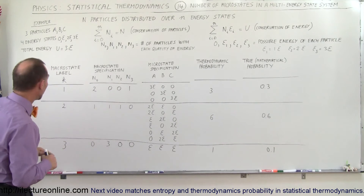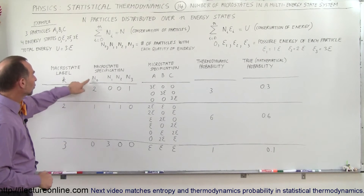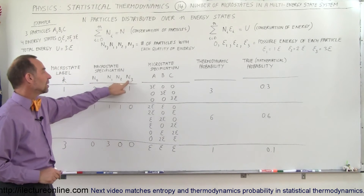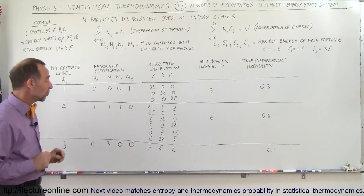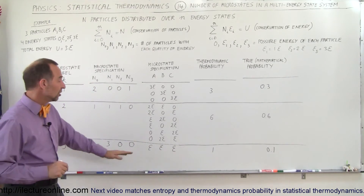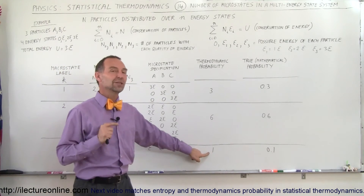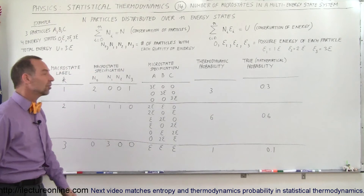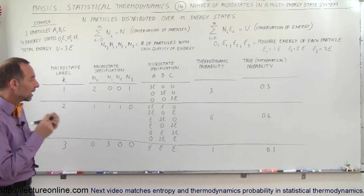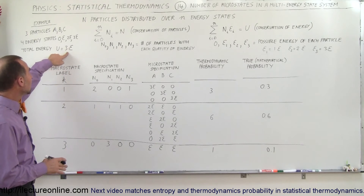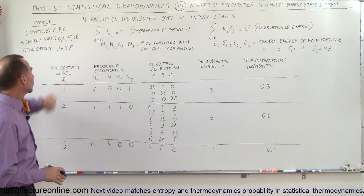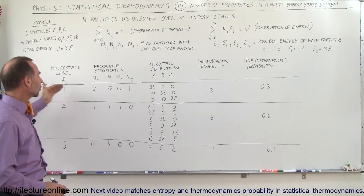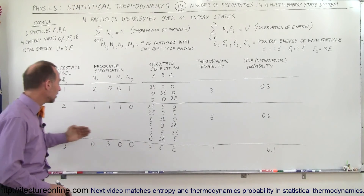The final microstate type is where all three particles each have E amount of energy — none have zero and none have 2E or 3E. There's only one way this can be arranged: E, E, E, which adds up to 3E. The thermodynamic probability is 1, and the mathematical probability is 10%. So in total, there are 10 different microstates: 3 in the first type, 6 in the second, and 1 in the third.